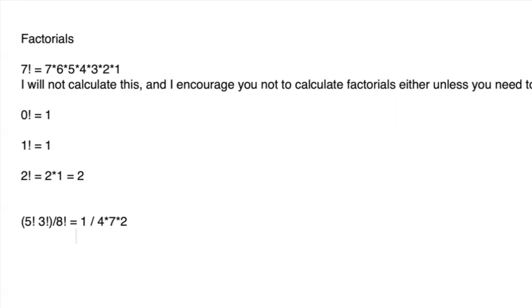So realistically, if I want 5 factorial times 3 factorial over 8 factorial, we can look at that as 1 over whatever 2 times 28 is, which is 56.